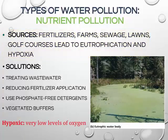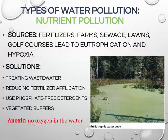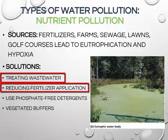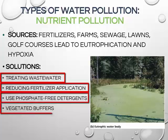Hypoxic means very low levels of oxygen and anoxic means no oxygen in the water. Nutrient pollution can be resolved by treating wastewater, judicious application of fertilizers, use of phosphate-free detergents, and building vegetative buffers on the edges of water bodies.